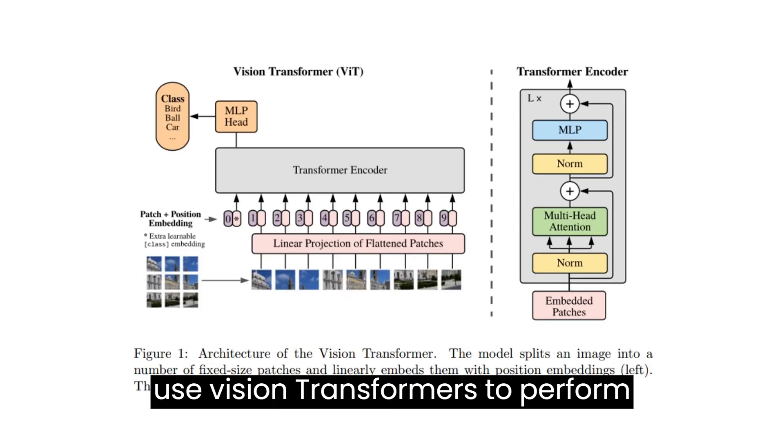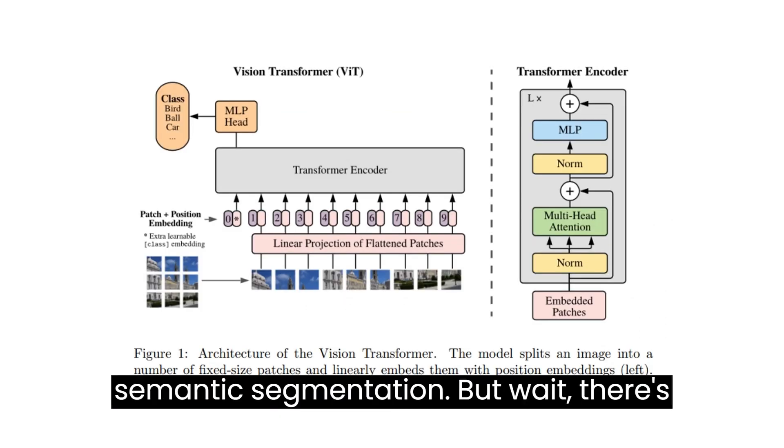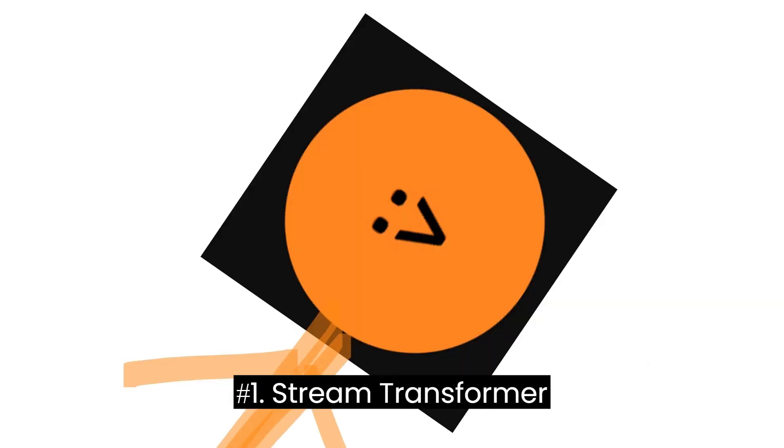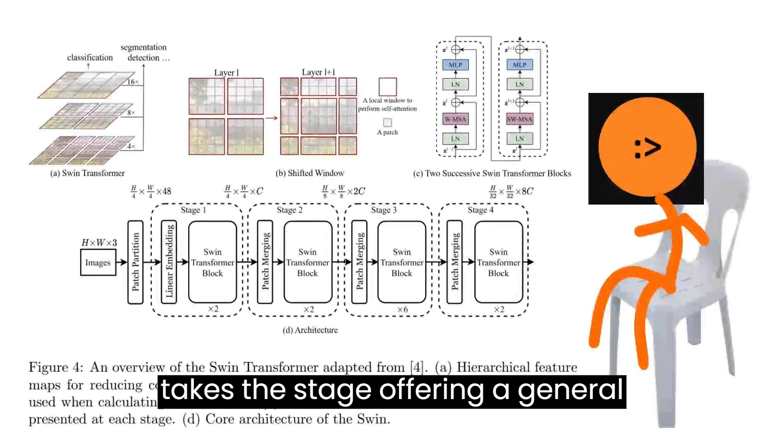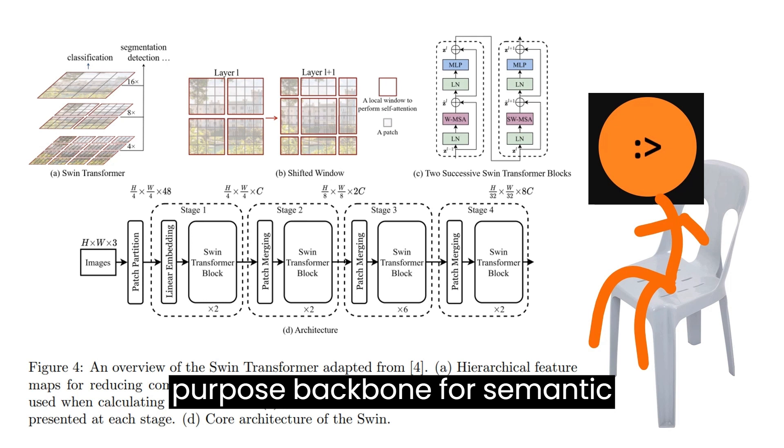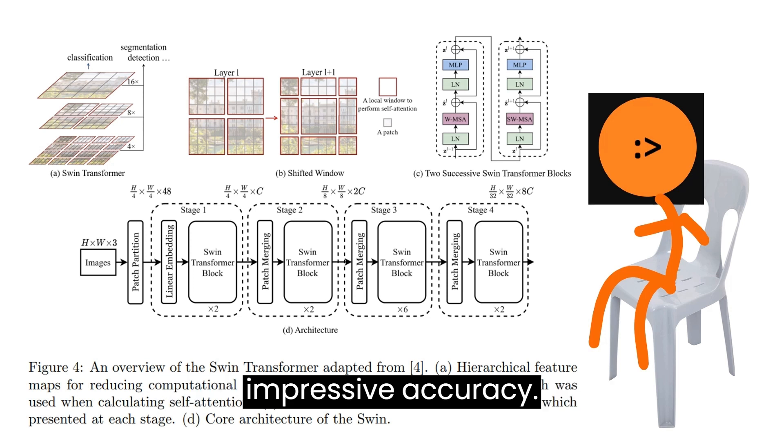Nowadays, we use vision transformers to perform semantic segmentation. But wait, there's more to it than just that. Number one, Swin transformer takes the stage, offering a general purpose backbone for semantic segmentation by using hierarchical feature maps and a shifted window approach that manages to achieve impressive accuracy.